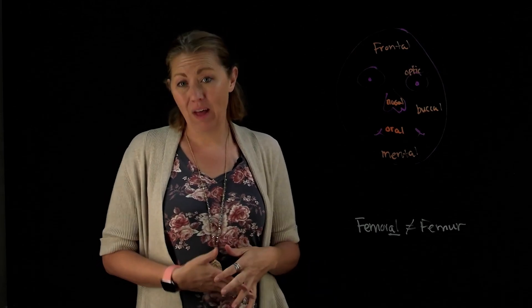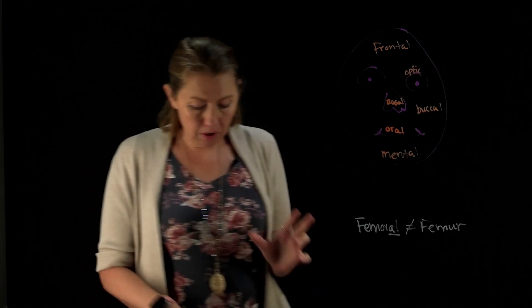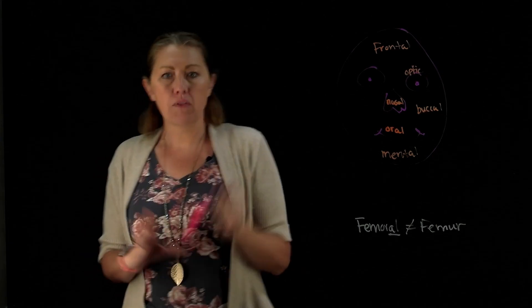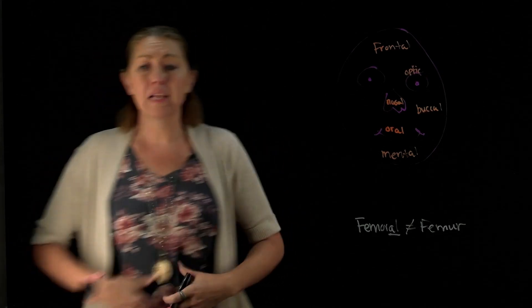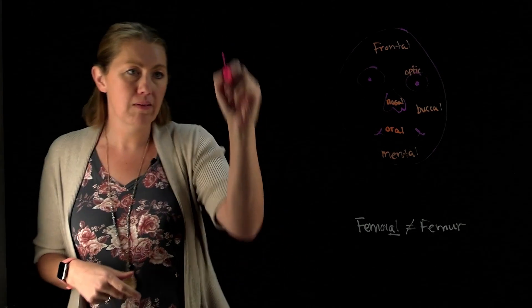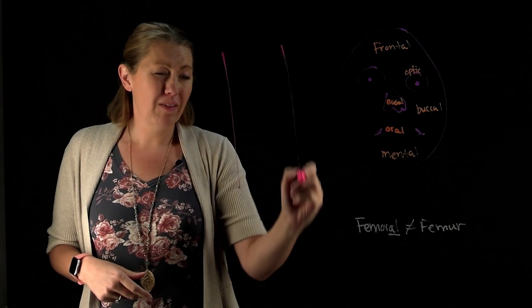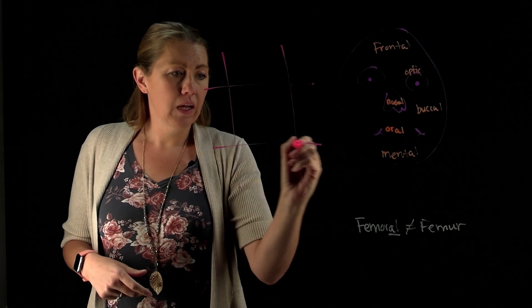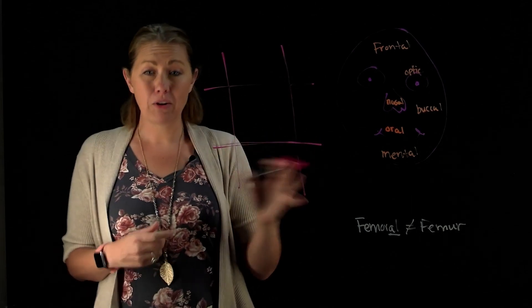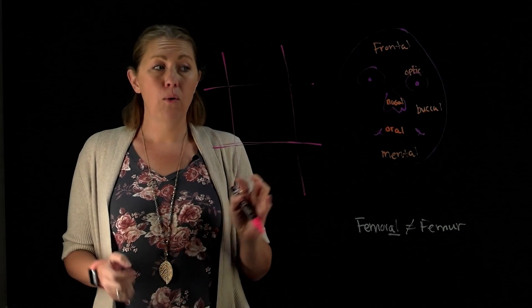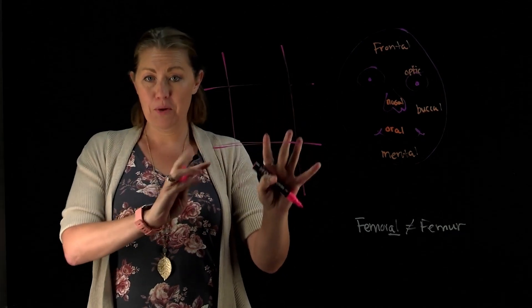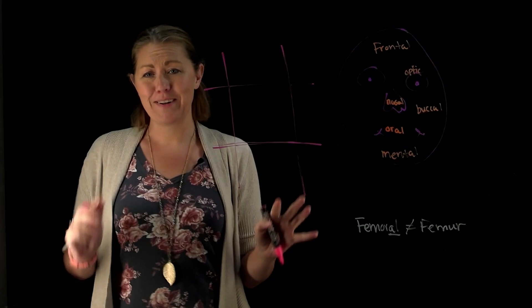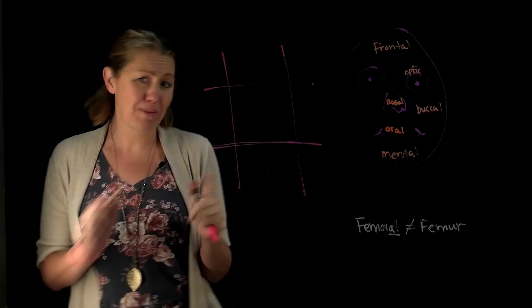Another part of regions that does throw students off that I want to show you is in the abdominal area. We make a grid system because there are a lot of organs within there. Another thing to point out is whenever you're doing right or left, you always do it for your patient's right or left. Now, because I'm writing on a light board, it does flip, so I have a really hard time telling you which side is right and left because it flips for me.